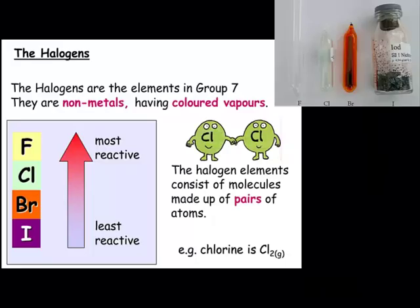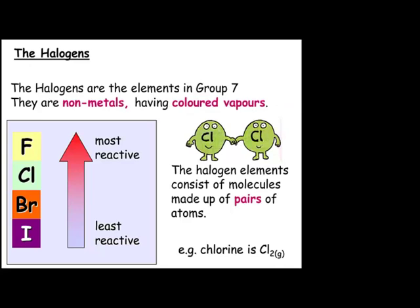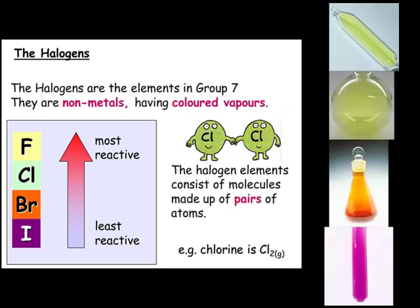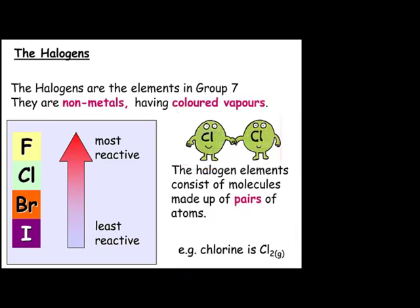The halogens are the elements in Group 7 of the periodic table. They are non-metals and they have coloured vapours. The halogen elements consist of molecules made up of pairs of atoms — for example, chlorine will not go around by itself; as an element it goes around as Cl₂, so it's a pair.